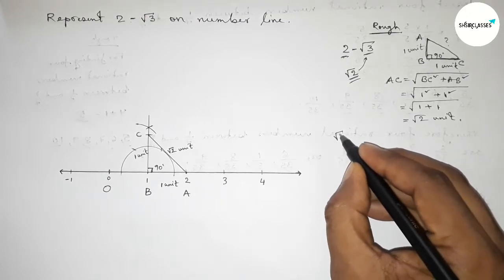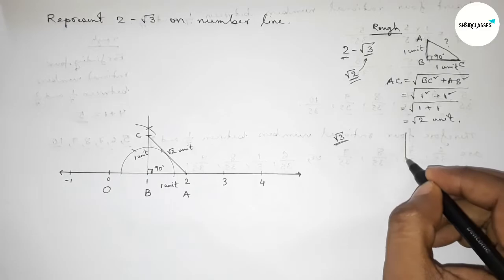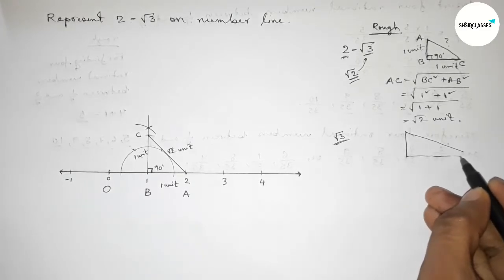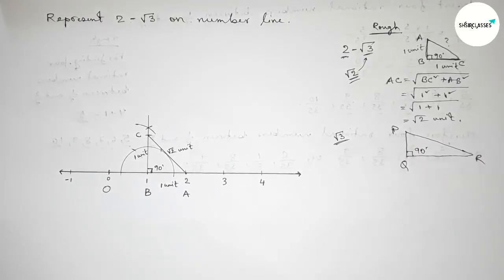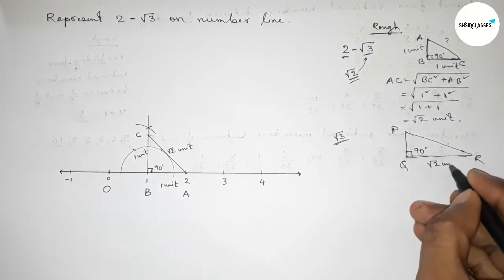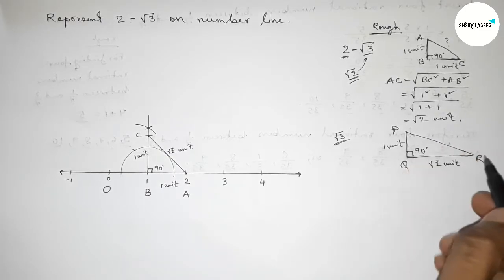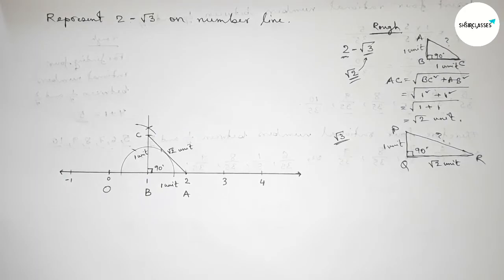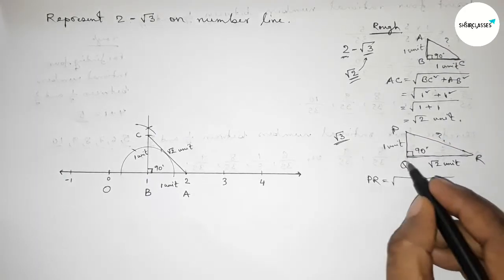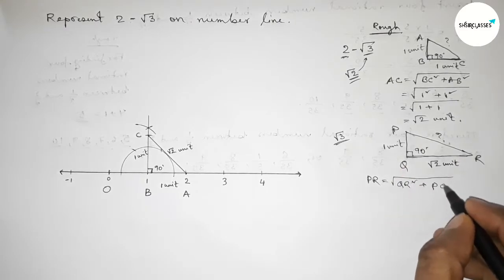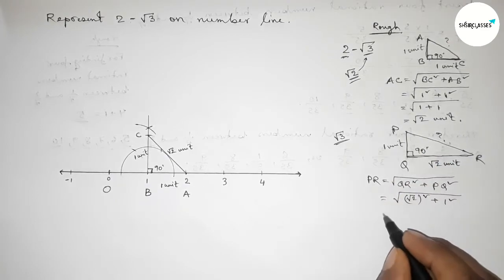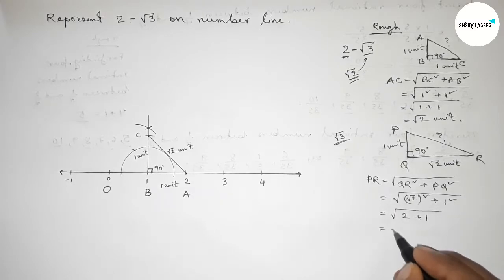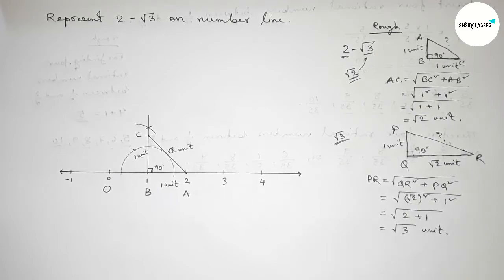Now we have to represent root 3. Roughly drawing here a right angle triangle PQR with 90 degrees. If we take the base QR equal to root 2 unit and the perpendicular PQ equal to one unit, then by Pythagoras theorem the hypotenuse PR equals root of (QR² + PQ²) = root of (√2² + 1²) = root of (2 + 1) = root 3 unit length.